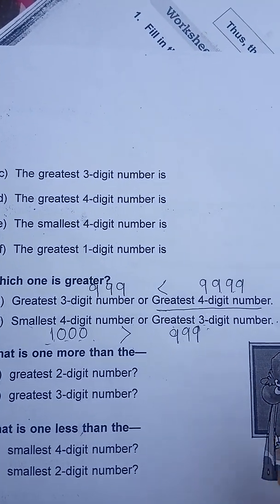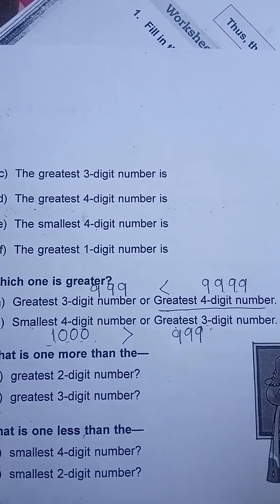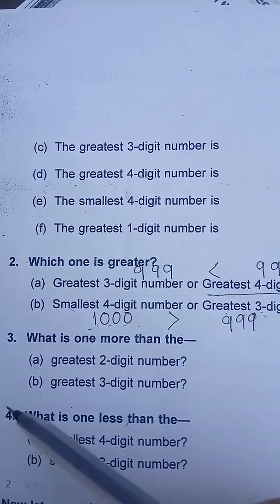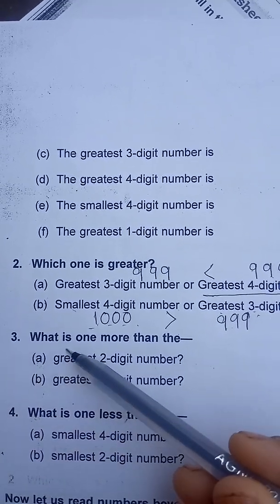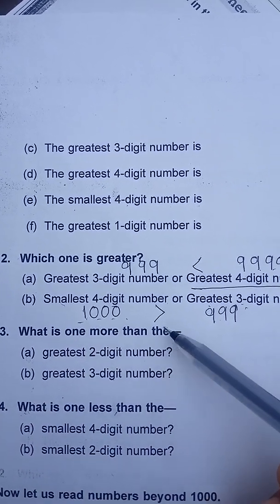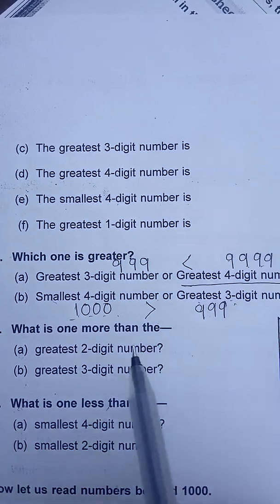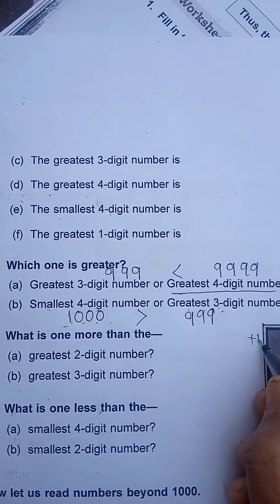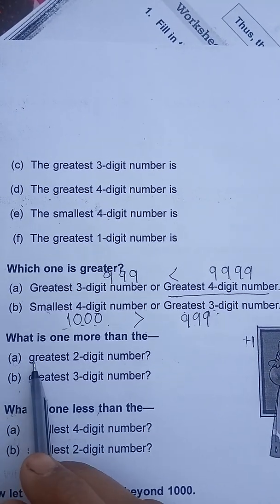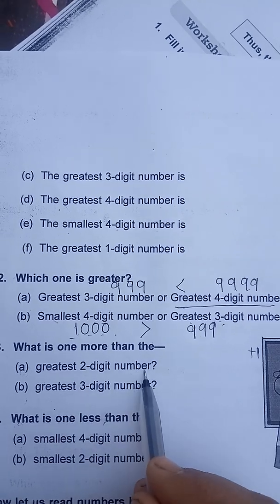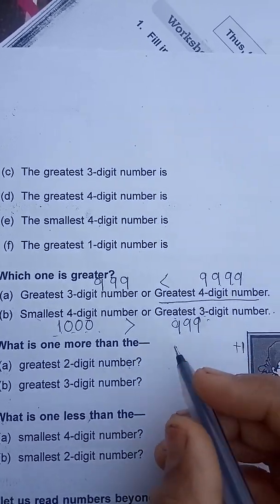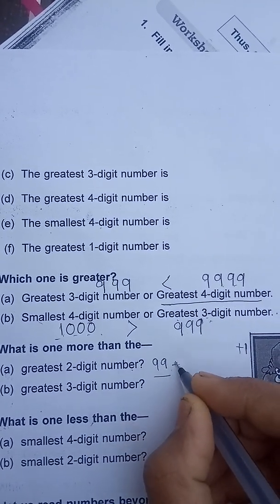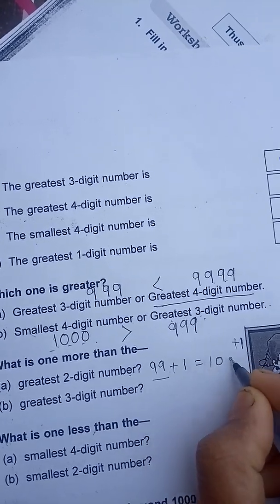These are very simple — apply a little logic and you will get the answer. Next: what is one more than the greatest two-digit number? One more means you have to add one. The greatest two-digit number is 99, and 99 plus one equals one hundred.